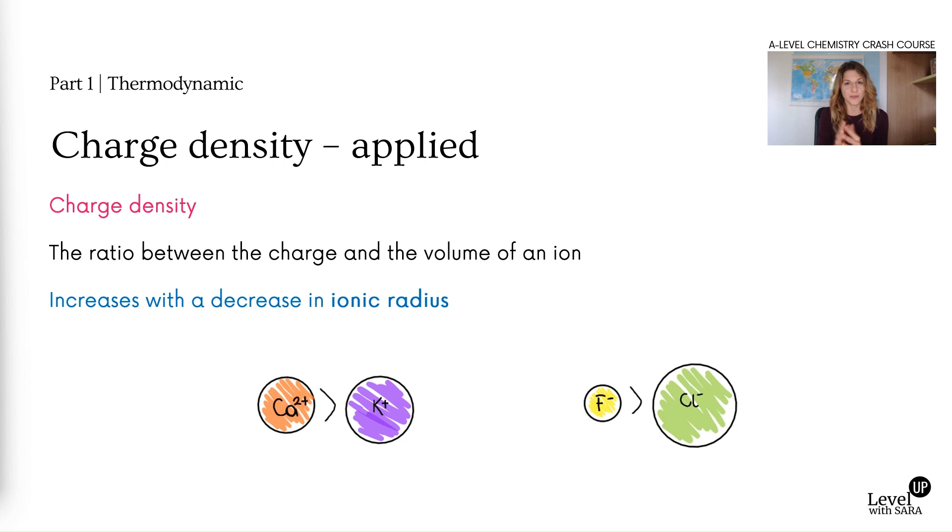If you think about calcium and potassium, calcium is a two plus ion, potassium is one plus ion. Very important to always look at the periodic table because from the position of the atoms we can get so many properties. Calcium and potassium are in the same period which means they have the same shielding, the same number of shells. They differ only in charge. Calcium is two plus so it has a greater charge spread over actually smaller volume because it gets smaller the more electrons it loses. So calcium has a greater charge density than potassium.